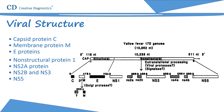Virulence factors include: capsid protein C, which facilitates viral binding; membrane protein M, a minor glycoprotein; E-proteins, which initiate infection and mediate viral entry; non-structural protein NS1, which may play a role in RNA replication; NS2A, involved in RNA replication and packaging; NS2B and NS3, which form a complex involved in polyprotein processing and RNA replication; and NS5, which has a major role in RNA replication.